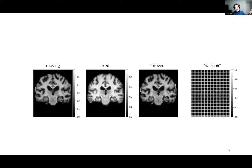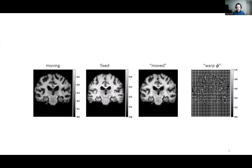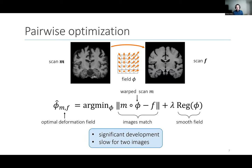Usually we get a moving image and a fixed image, and what we want is for the moving image to slowly change to look like the second. Over decades, people have developed better ways to match images, smooth the deformation field, and optimize this. Every algorithm deployed does this — given two images it's never seen before, it starts this optimization process from scratch. The awesome thing is there's been significant development, but the problem is it's slow: every time it sees new images it starts the process all over again.